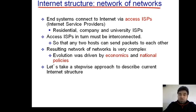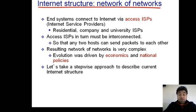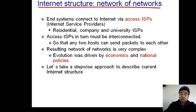How does that end system get all the services of the internet by just getting connected with the access ISP? Because all the access service providers across the world — and there must be millions of them — must be connected with each other to transfer data from one point to the other end system. But imagine how complex that scenario would be if millions of internet service providers are connected with each other in a mesh topology.